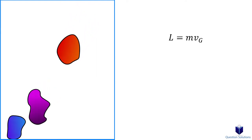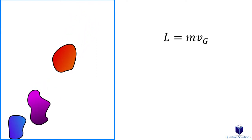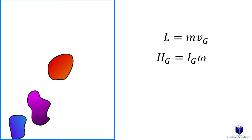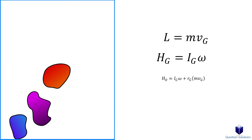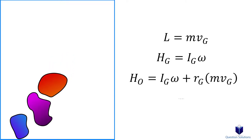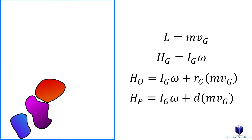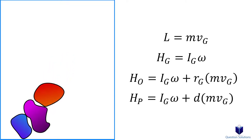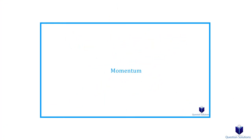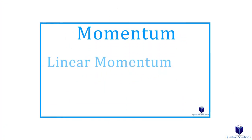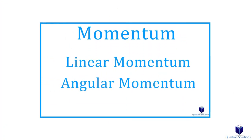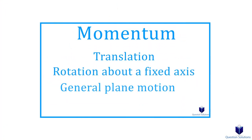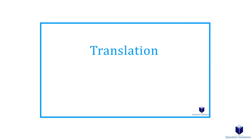Conservation of momentum is an extension of impulse and momentum. You will need to know how to find linear momentum and angular momentum of rigid bodies. In the previous video, I talked in detail about how to find these, so if you forgot or need a refresh, please see the description.